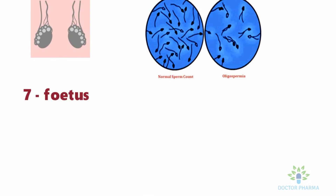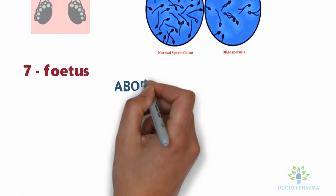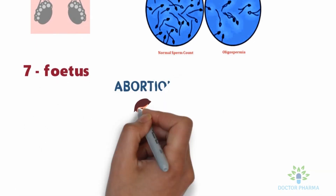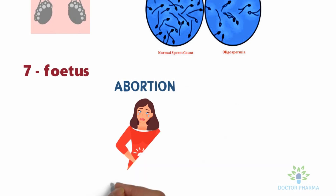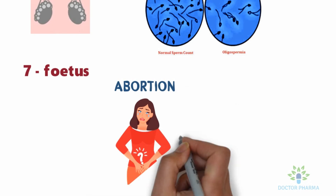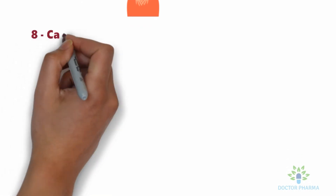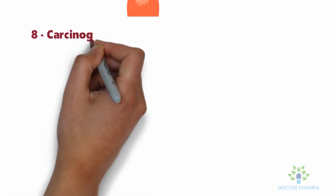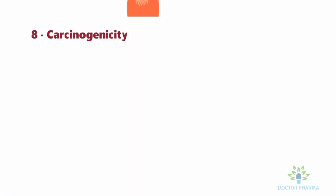The seventh point concerns the fetus. When a pregnant woman takes cytotoxic drugs, it can damage the fetus, resulting in abortion and teratogenesis. The eighth point is carcinogenicity.